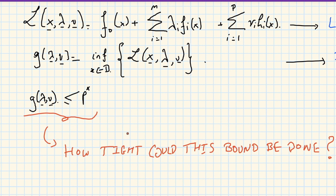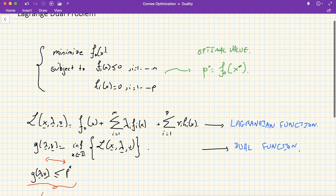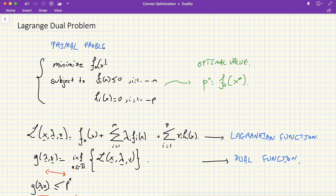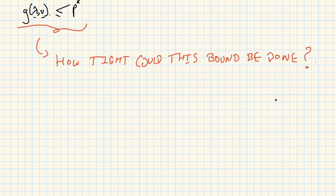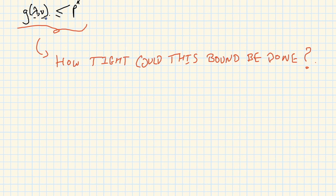There's a gap between the Lagrangian dual and the optimal value that we'll characterize later in this lecture. The original problem in hand is referred to as the primal problem, with optimal value p-star. Since the tighter this gap is the better the Lagrangian dual approximates p-star, we look at a related problem called the dual problem. Looking at the inequality, it's easy to figure out what the dual problem is: we try to push the dual g to hit p-star.